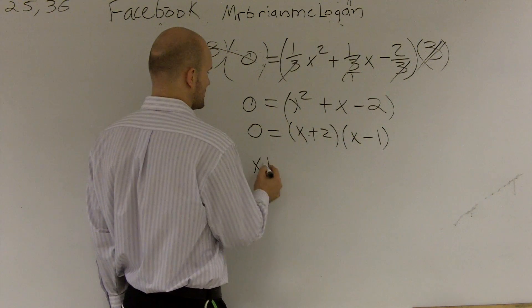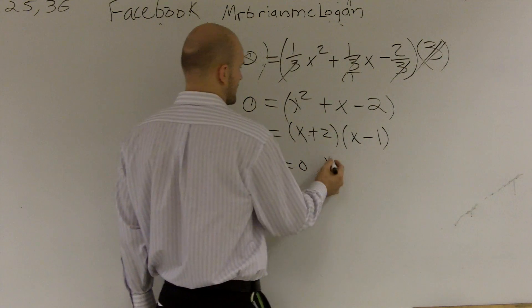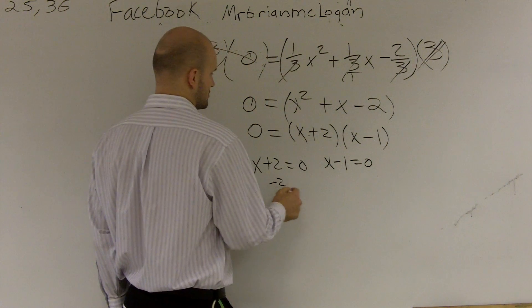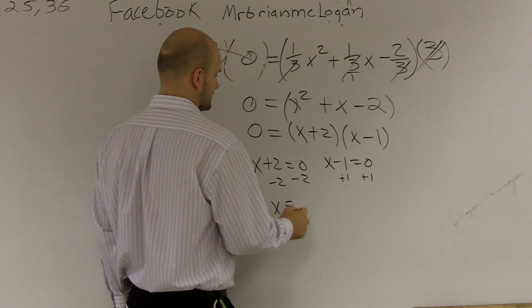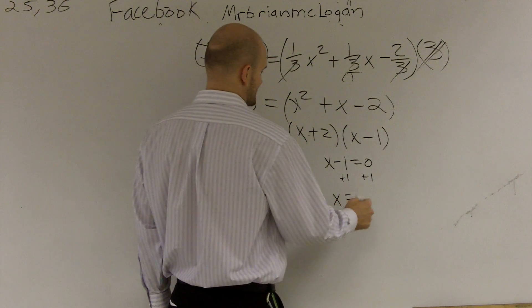So therefore, 0 equals x plus 2 equals 0 and x minus 1 equals 0. Subtract the 2 on both sides. x equals negative 2. x equals positive 1.